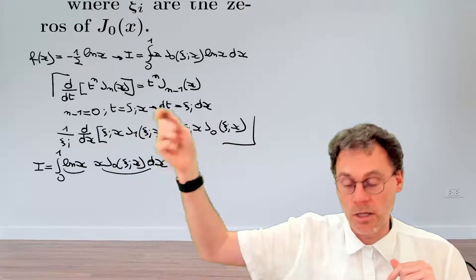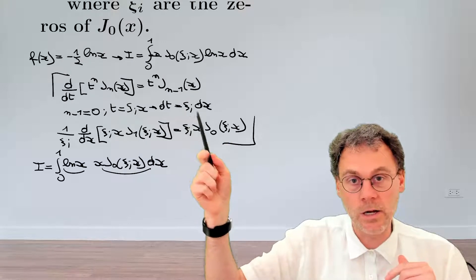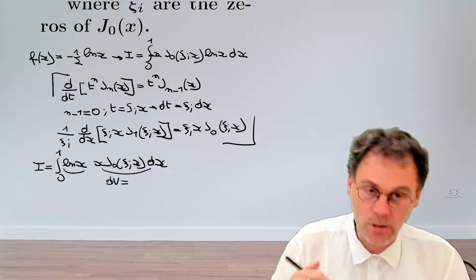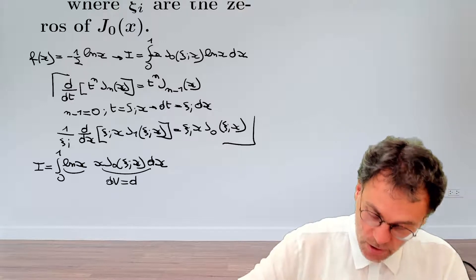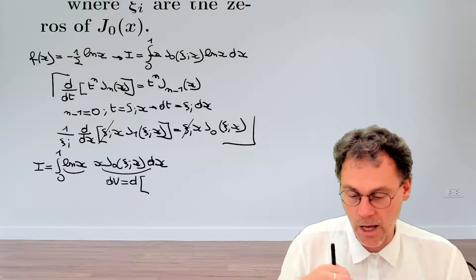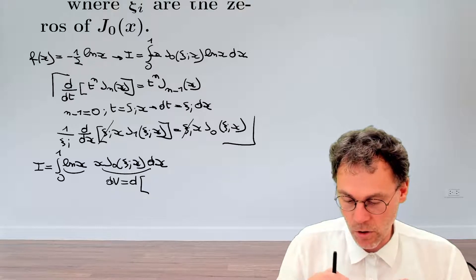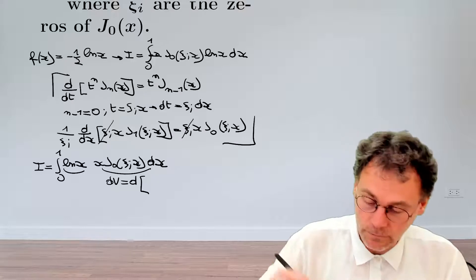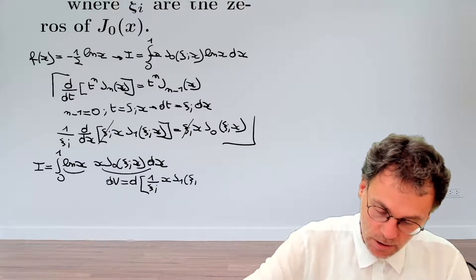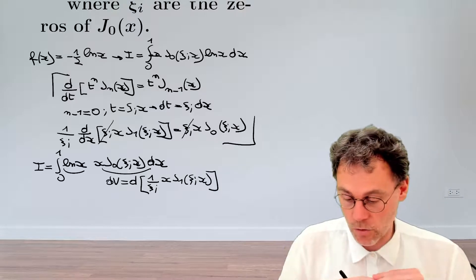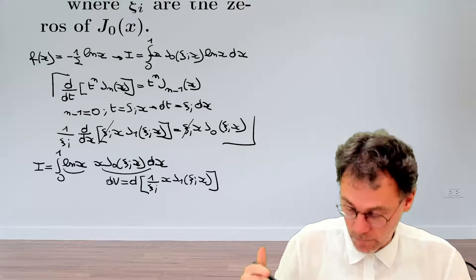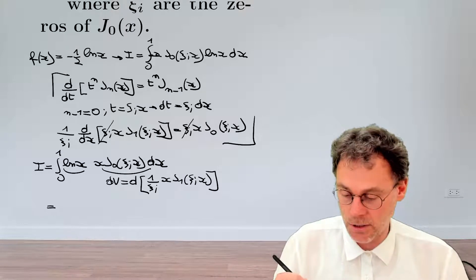We've just shown upstairs there that dv is equal to d, let's perhaps simplify this and get rid of xi i on both sides. So we know that this thing is equal to the derivative of 1 over xi i. Then we have x, j1, xi i of x. So thanks to our work there, we know what v is. And then again, it's just a matter of setting the machinery of integration by parts into motion. So first of all, we have the integral. So we have the u v evaluated between 0 and 1.